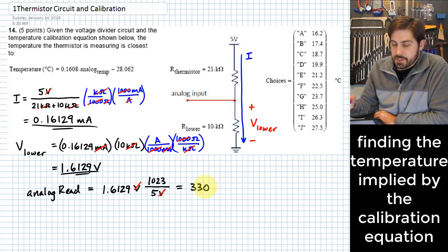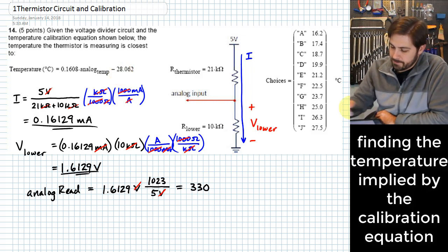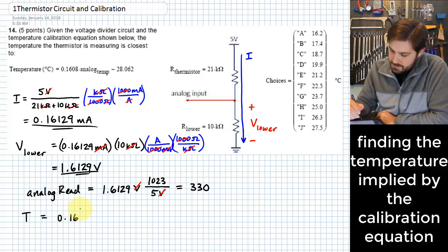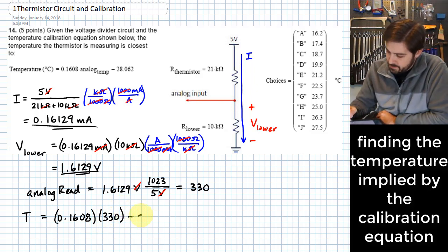So we pretty much just have one more step now and it's to use this calibration equation that we have for temperature for this circuit and figure out temperature now that we know an analog read value. So the temperature is going to be equal to 0.1608 times 330, the value that we just got, minus 28.062.